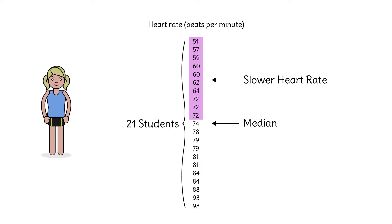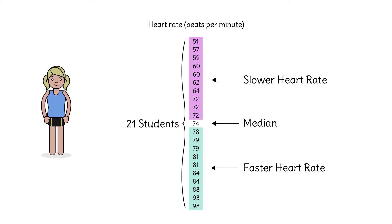There are 10 slower heart rates, 10 faster heart rates, and the median of 74, for a total of 21 heart rates. We also want to find the most common heart rate — the mode. 72 shows up three times on the list, which is more than any other value. So the mode is 72 beats per minute.